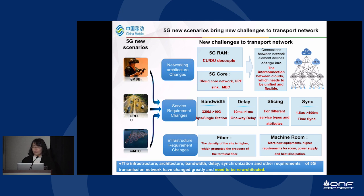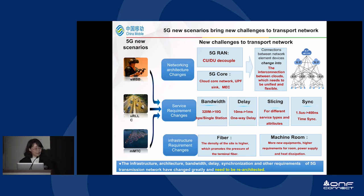These changes bring specific requirements for the transport network. Thirdly, the infrastructure — fiber and machine rooms — are all changed for the 5G network. Taking all these things together — infrastructure, architecture, bandwidth, delay, synchronization, and other requirements — 5G has changed greatly, so we probably need to re-architect the whole transport network.